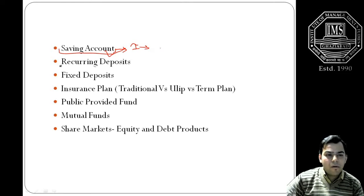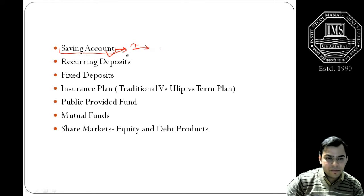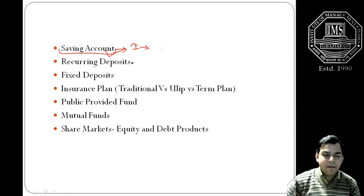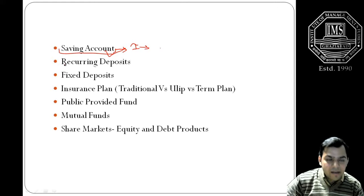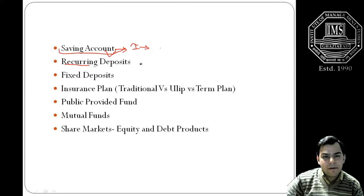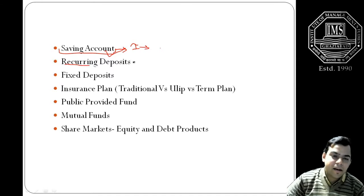Next important component of the investment is the recurring deposits. Recurring deposits also take place in the bank, maybe in a public sector bank or a cooperative bank. Here the word recurring is used - recurring means it will continue. The period will be continuous, maybe on a monthly basis, maybe quarterly, maybe half-yearly basis.